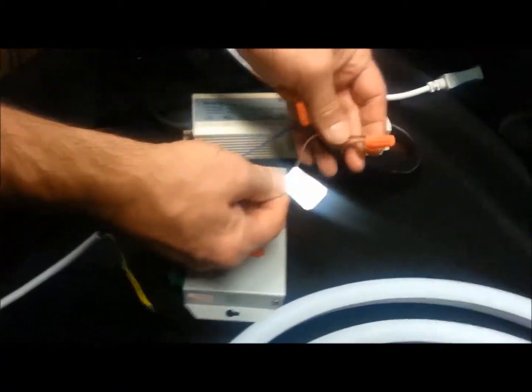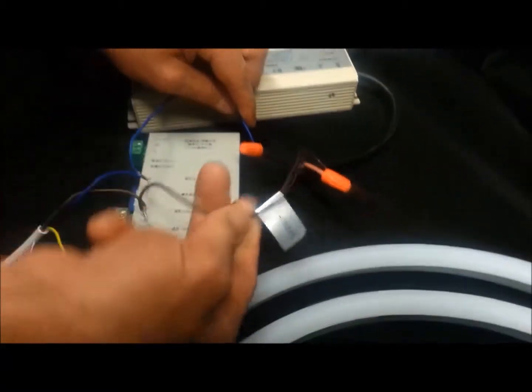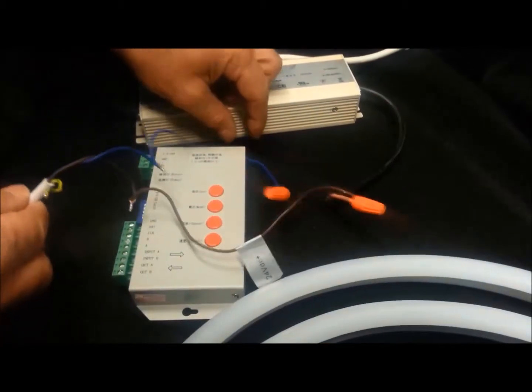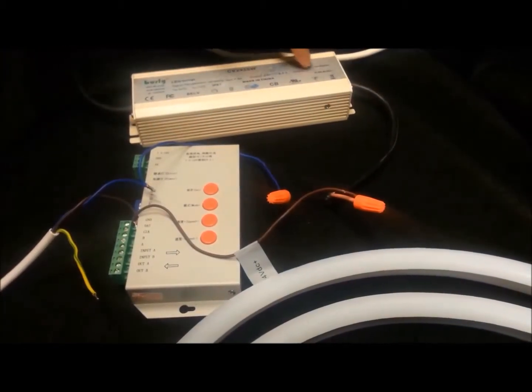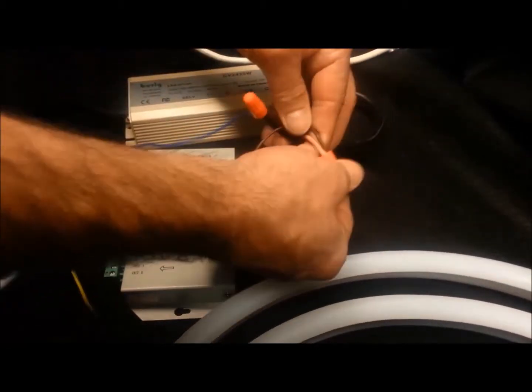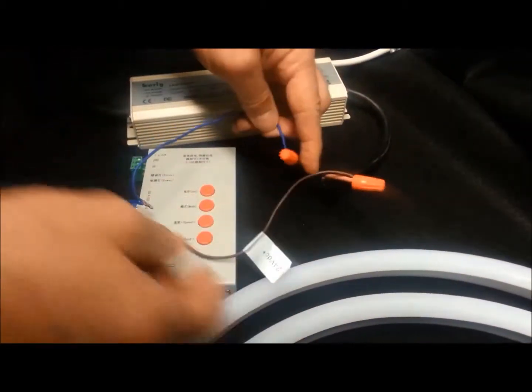Connect the brown 24V DC wire from the flex tube front connector kit to the positive side of the power supply. The blue wire is the ground and connects to the black wire. They also connect to the controller block.